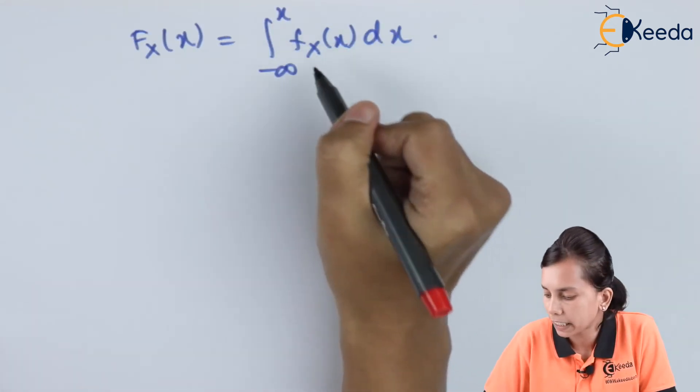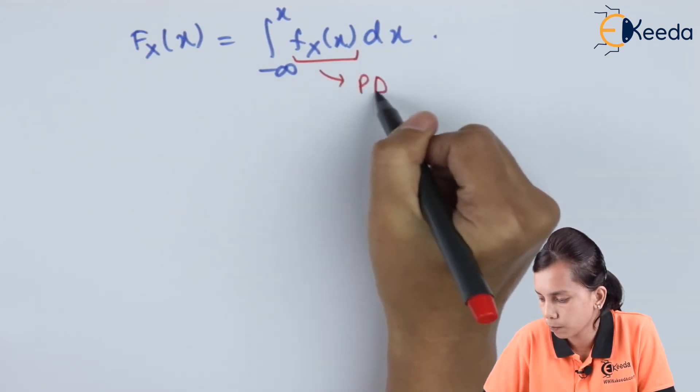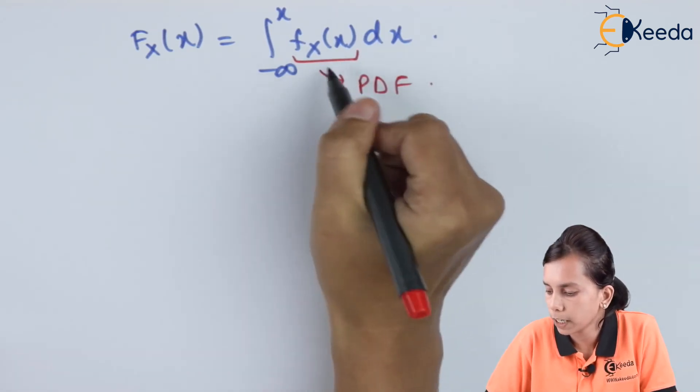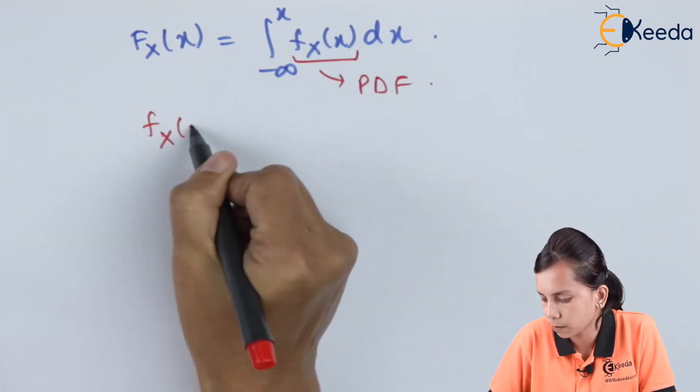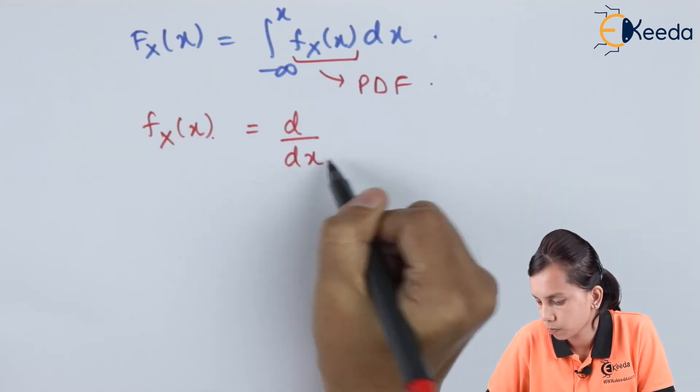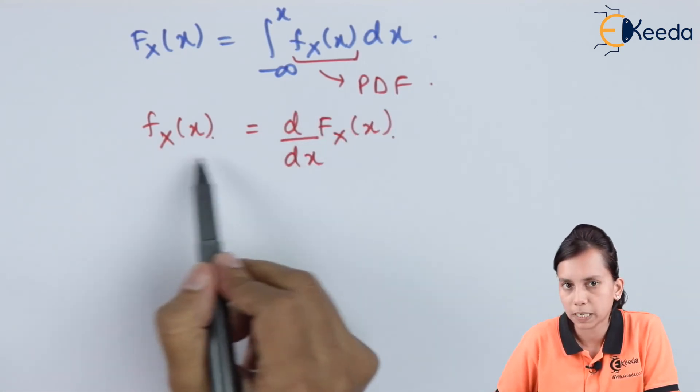Now, I am interested in finding out the value of f_x(x) that is PDF. To get the value of PDF, f_x(x), if I differentiate both sides, I will get the value of PDF.